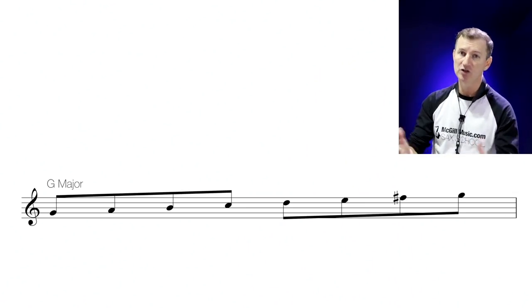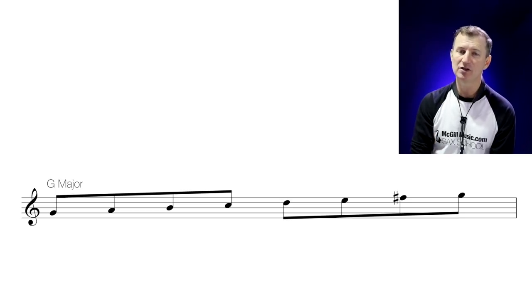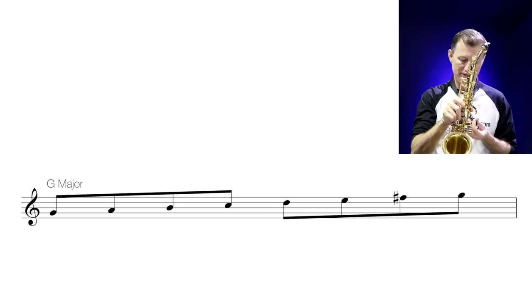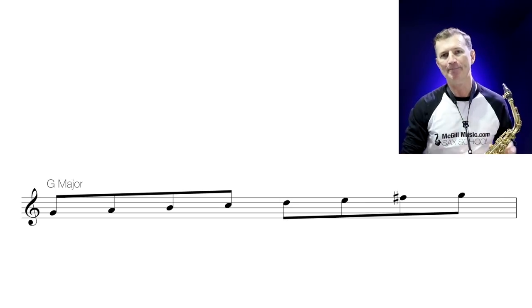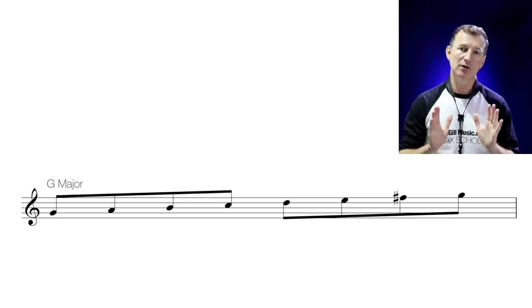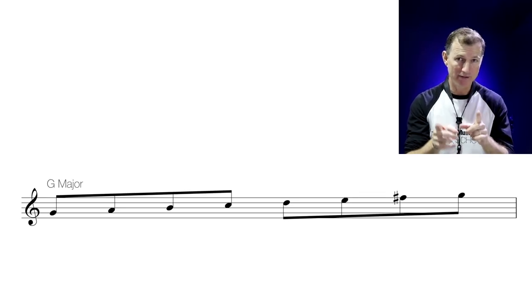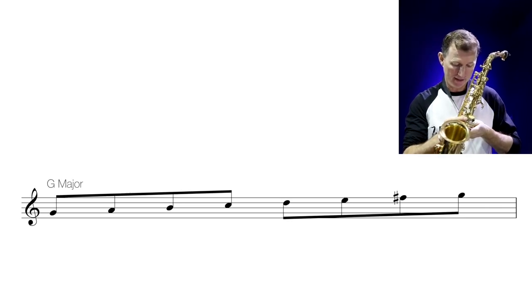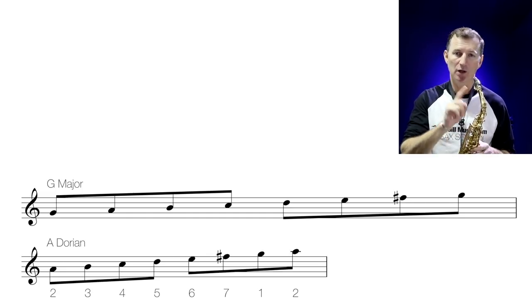So how about we try this out again in another key area? Let's say we look at the key of G major. A G major scale starts on G and goes all the way up to G, but we've got one sharp in G major, which is F sharp. Of course, the G major scale could also be called the Ionian mode — we know it as a major scale. If we were going to look at the Dorian mode in the key of G, we'd start on the second note of the scale, which in our key of G major is A, and we'd build a scale using the G major scale notes but going from A back up to A again.